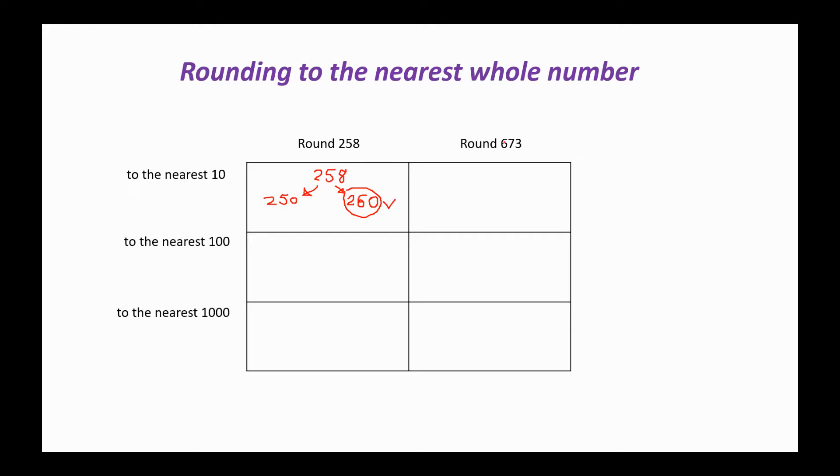Let's try rounding 673 to the nearest 10 then. The 10 that comes before, if I draw it in for you, 673 just there. The 10 that comes before is 670. And the 10 that comes afterwards is 680. And if we think about it, 673 is closer to 670 than it is to 680, so this time our answer is 670.